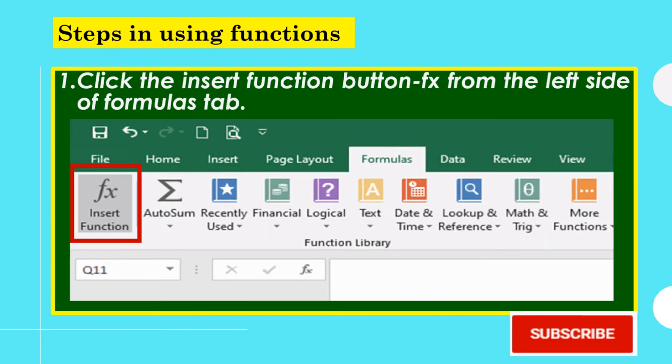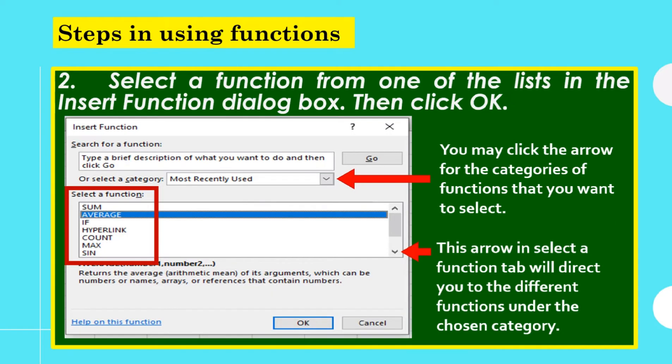Step 1. Click the Insert Function button, FX, from the left side of Formulas tab. Step 2. Select a function from one of the lists in the Insert Function dialog box. Then, click OK. You may click the arrow for the categories of functions that you want to select. This arrow in the Select Function tab will direct you to the different functions under the chosen category. In this example, the category that we choose is most recently used. Under this category, we select the Average function.